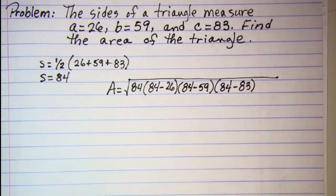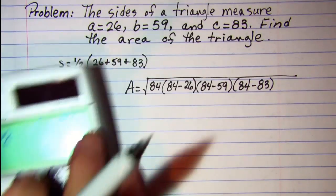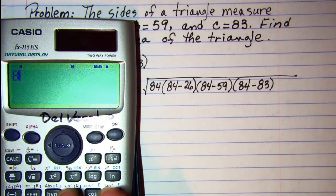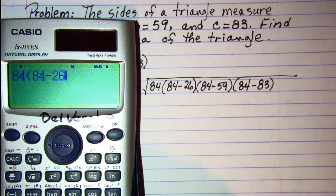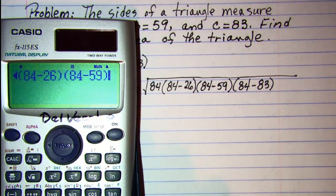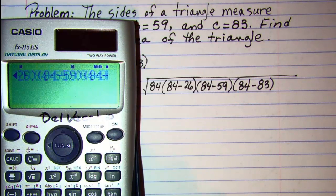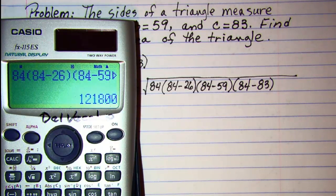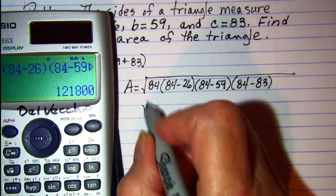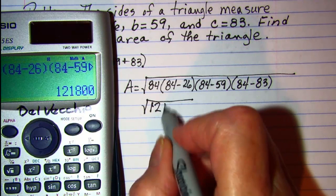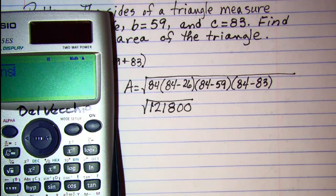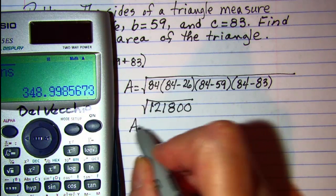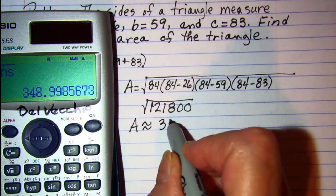We can just do this right on our calculator. We have 84 times 84 minus 26 times 84 minus 59 times 84 minus 83. That's just 1. So I have the square root of 21,800. Now if we square root that answer, we get an area of approximately 349.